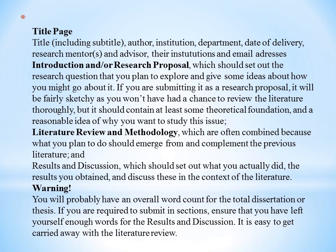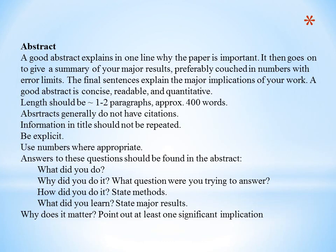A good abstract explains in one line why the work is important. It then often goes on to give a summary of major results, preferably couched in numbers with error limits. The final sentences explain the major implications of your work. A good abstract is concise, readable, and quantitative. Be explicit — information in the title should not be repeated, and answers to key questions should be found in the abstract.